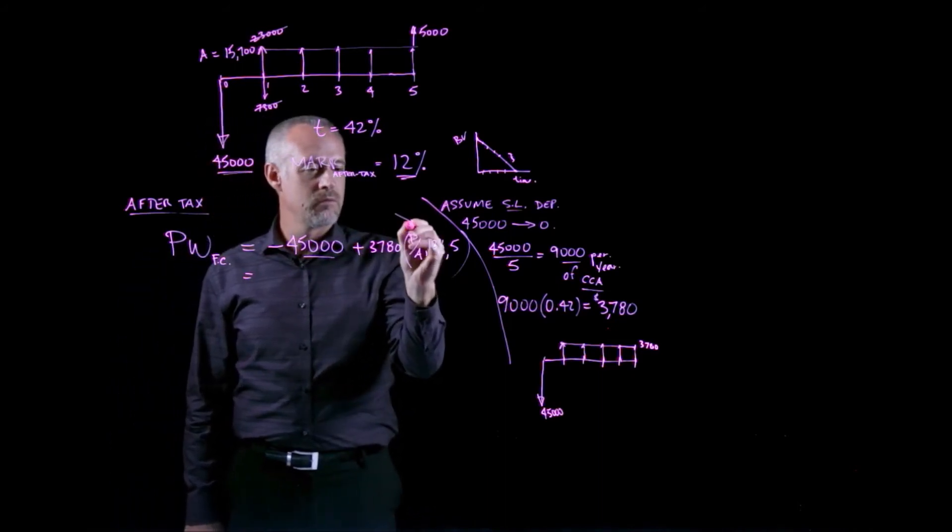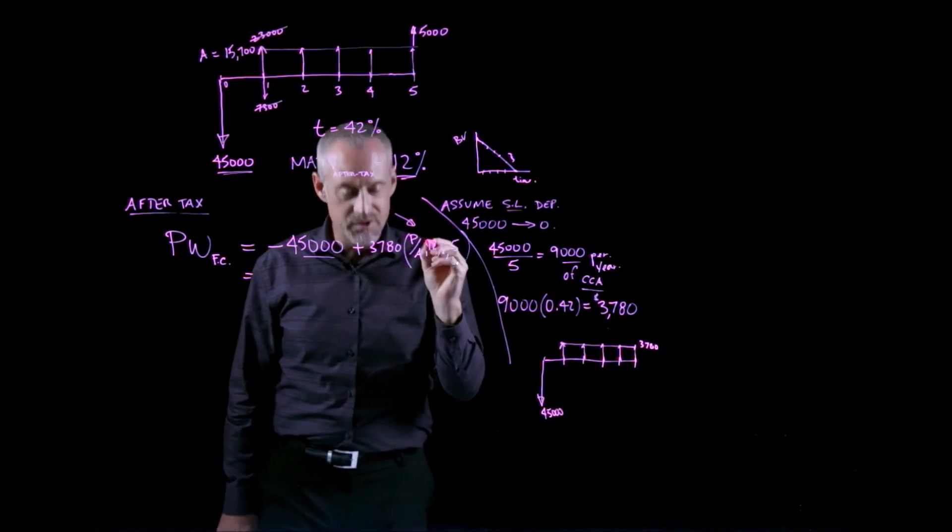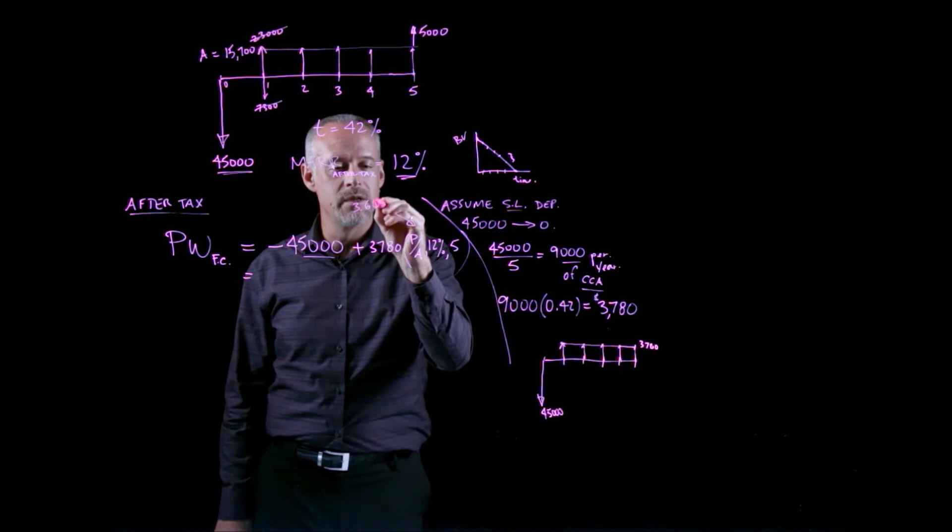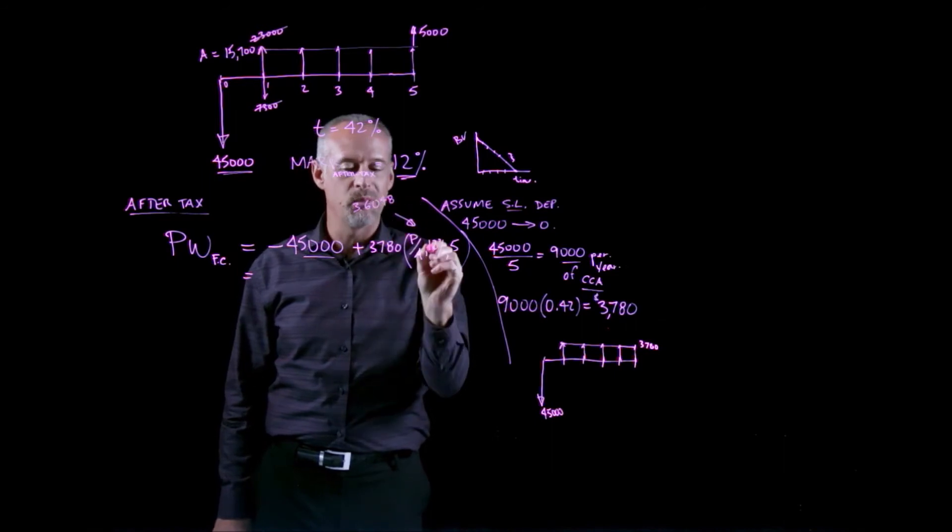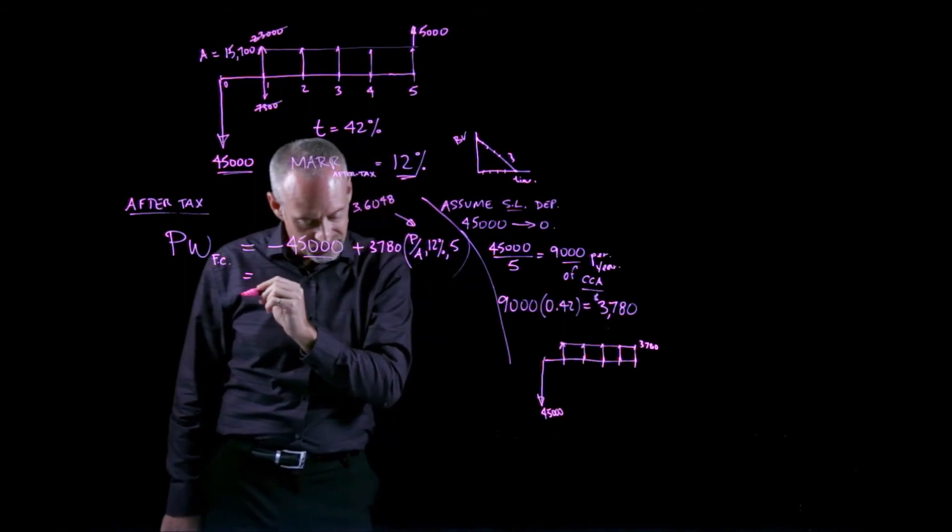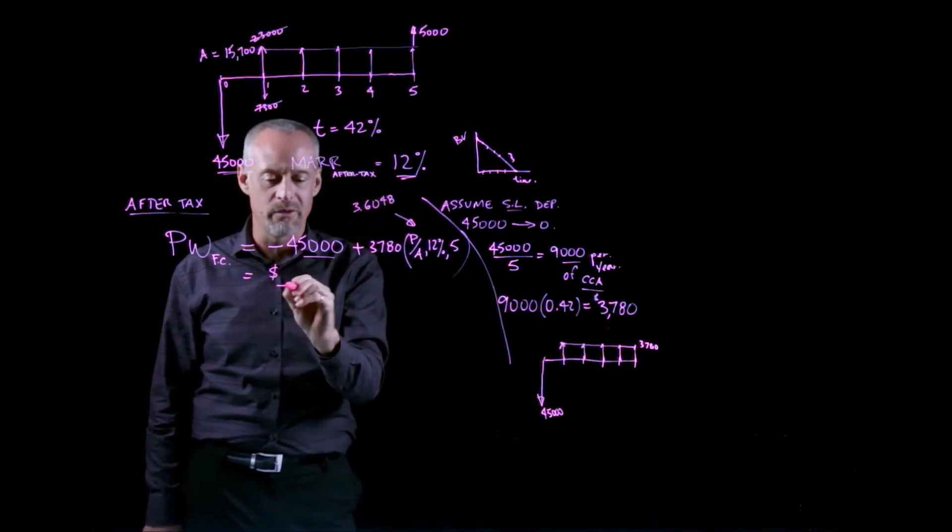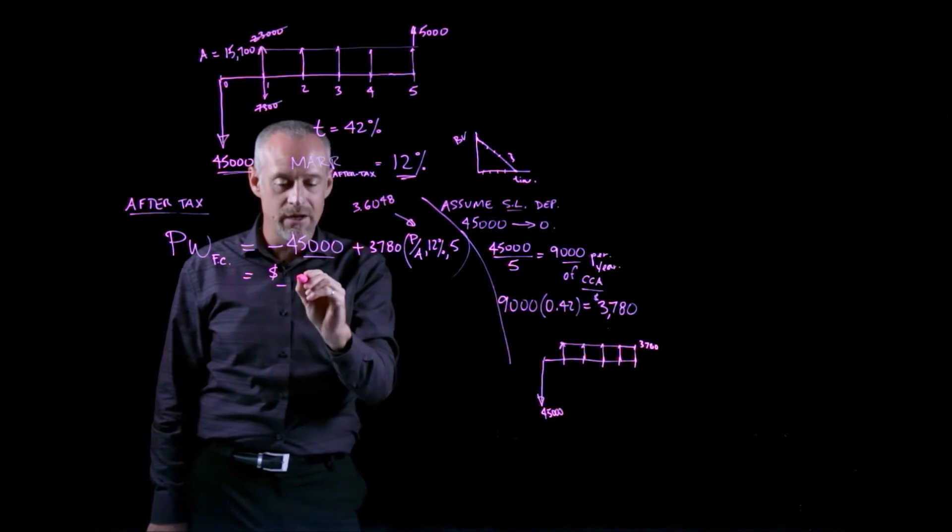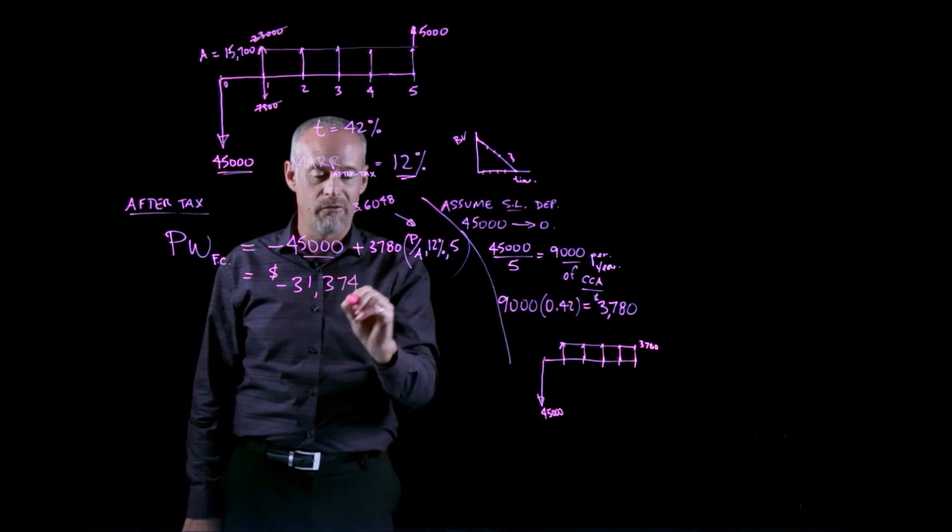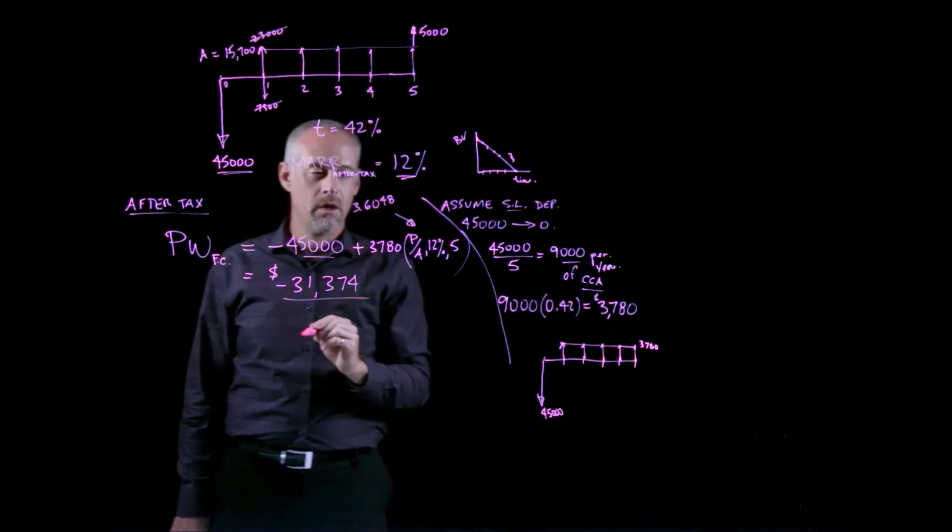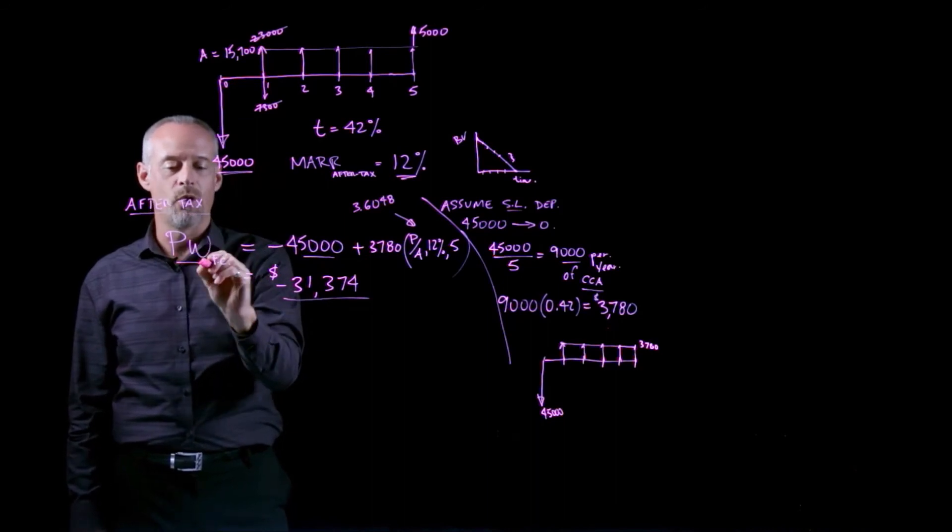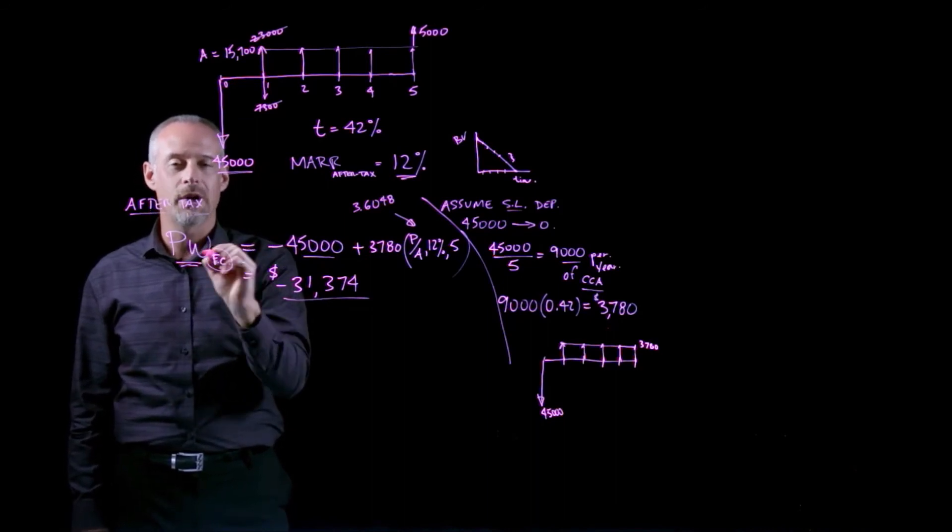So we can work out what this is. So this factor you can find in your table, it's 3.6048. If you plug that in here and make sure we use the negative for the $45,000, we end up with a present worth of the first cost of negative $31,374. So all of this is really just dealing with the after-tax present worth of the first cost.